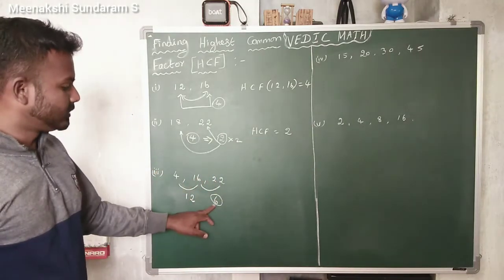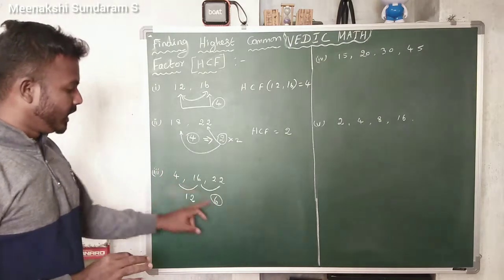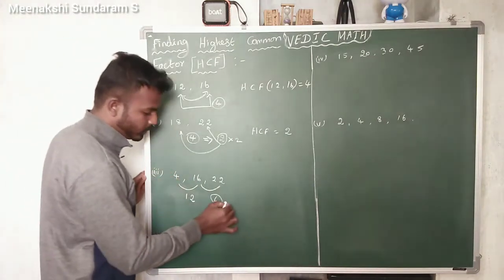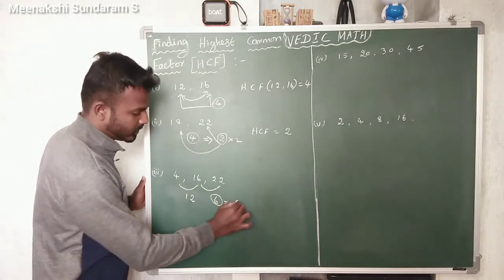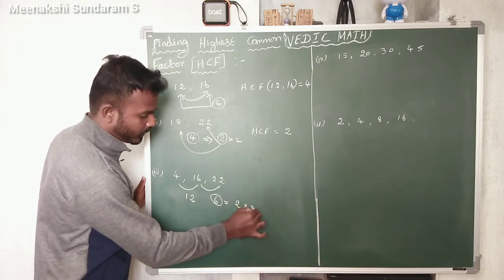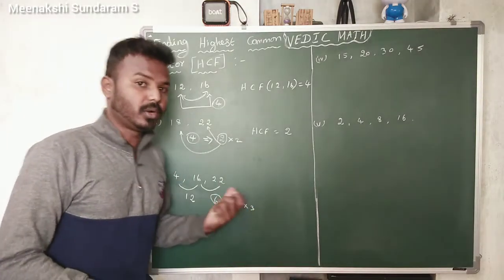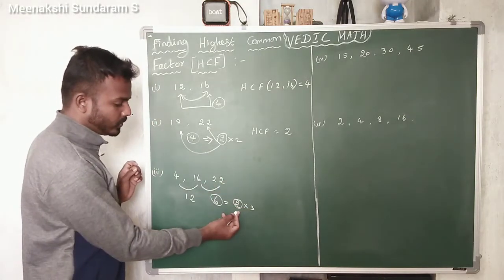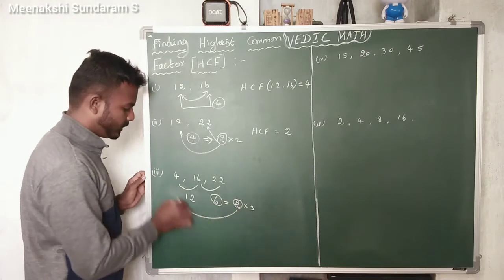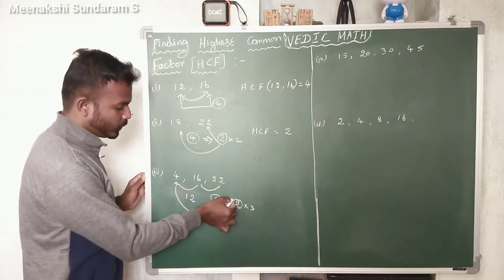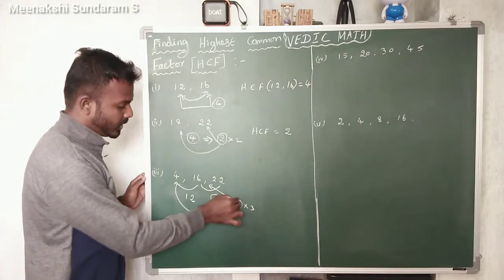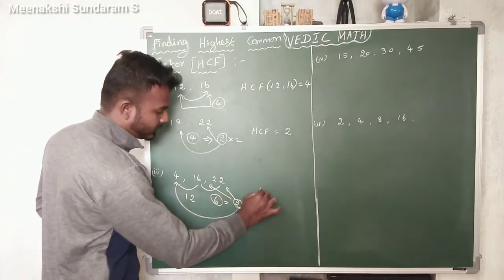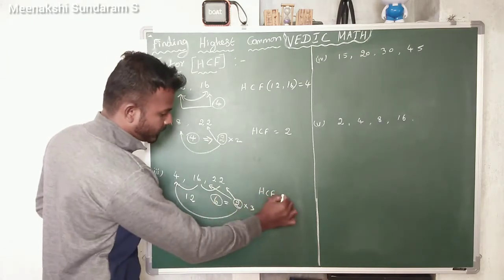Now check whether 6 divides 4 — it will not divide. Even 6 does not divide 16, and 6 does not divide 22 either. So find the factors of 6: 2 into 3. Take the smaller factor, which is 2. Check: 2 divides 4, 2 divides 16, and 2 divides 22. So the HCF of these numbers is 2.